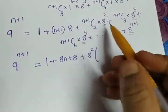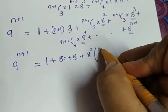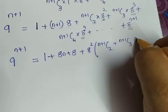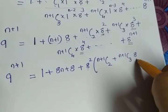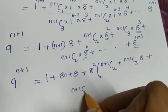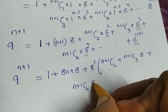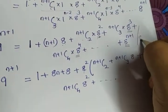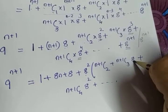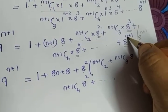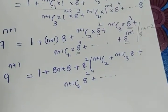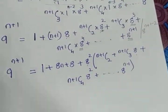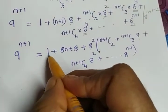I am taking 8² outside from this term onwards. The balance from the (n+1)C2 term is (n+1)C2, and the next term gives (n+1)C3 · 8, and similarly subtracting 2 from n+1 gives 8 raised to n-1 for the last term. So we take 8² common from all terms from (n+1)C2 onwards.